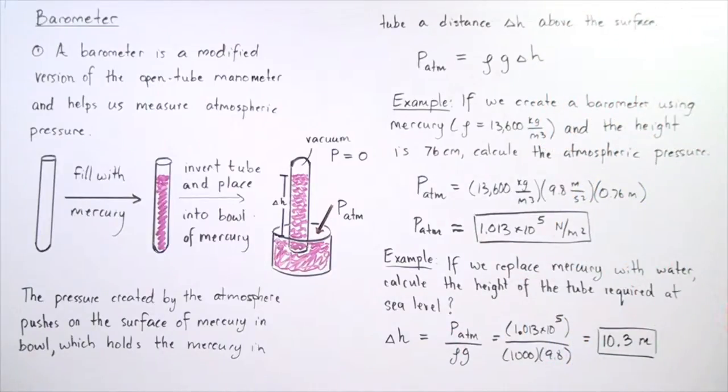Now, let's look at example number two. If we replace mercury with water, which has a density of 1,000 kilograms per meter cubed, calculate the height of the tube required at sea level.